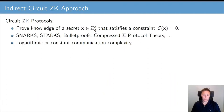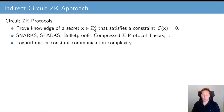On the other end, we have the very generic circuit zero-knowledge protocols. In a circuit zero-knowledge protocol, the prover wishes to prove knowledge of a secret vector x that satisfies a constraint C(x) = 0, captured by some arithmetic circuit C. Recently we have seen many advances in circuit zero-knowledge protocols — SNARKs, STARKs, bulletproofs, compressed sigma protocol theory — different lines of work achieving logarithmic or even constant communication complexity for the circuit zero-knowledge problem.